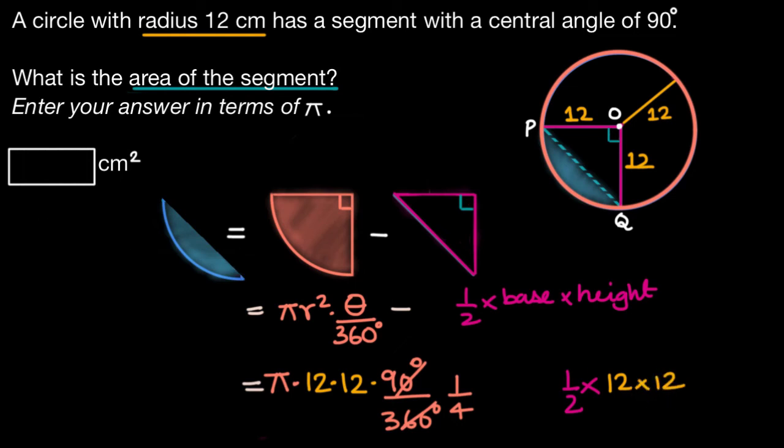Now let's simplify this to find the area of our segment. So 2 times 6 is 12, 6 times 12 is 72, so the triangle's area is 72 centimeters squared. And here 4 times 3 is 12, 12 times 3 is 36, times π is 36π. So the area of our sector is 36π centimeters squared. So we can say the area of our segment is 36π minus 72 centimeters squared.